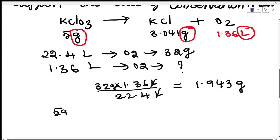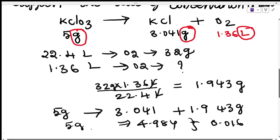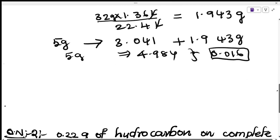So KClO3 — 5 grams — is yielding 3.014 grams of KCl plus 1.943 grams of oxygen. Adding both products gives 4.984 grams. The difference from 5 grams is only 0.016, a very negligible percentage. We can conclude that this result follows the law of conservation of mass.